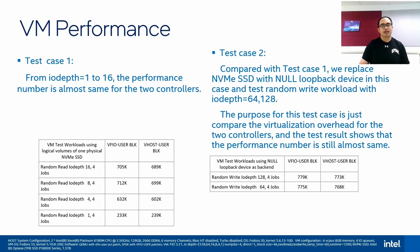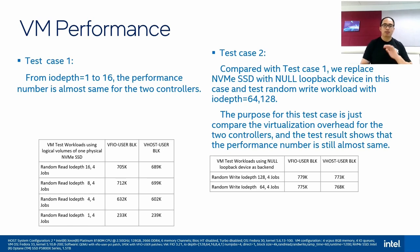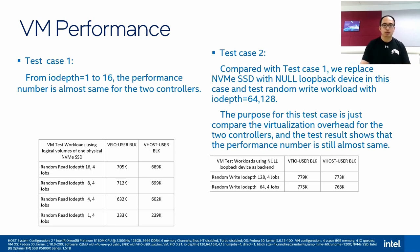We also tested another scenario in test case 2. We replaced the physical SSD with two null loopback block devices to test KVM efficiency and virtualization overhead. All other parameters are the same as test case 1, except the I/O queue depth and I/O mode — random write is used instead of random read. We can see that even using high queue depth, the two solutions are still almost the same, and the two additional pollers have almost no impact on the result.